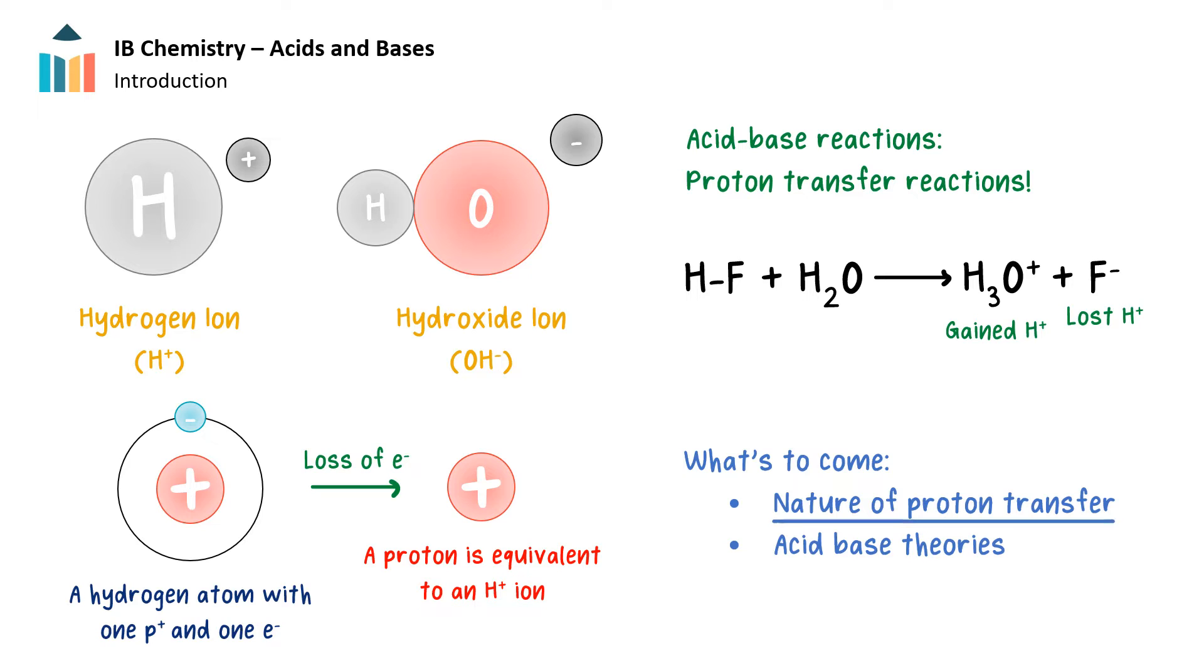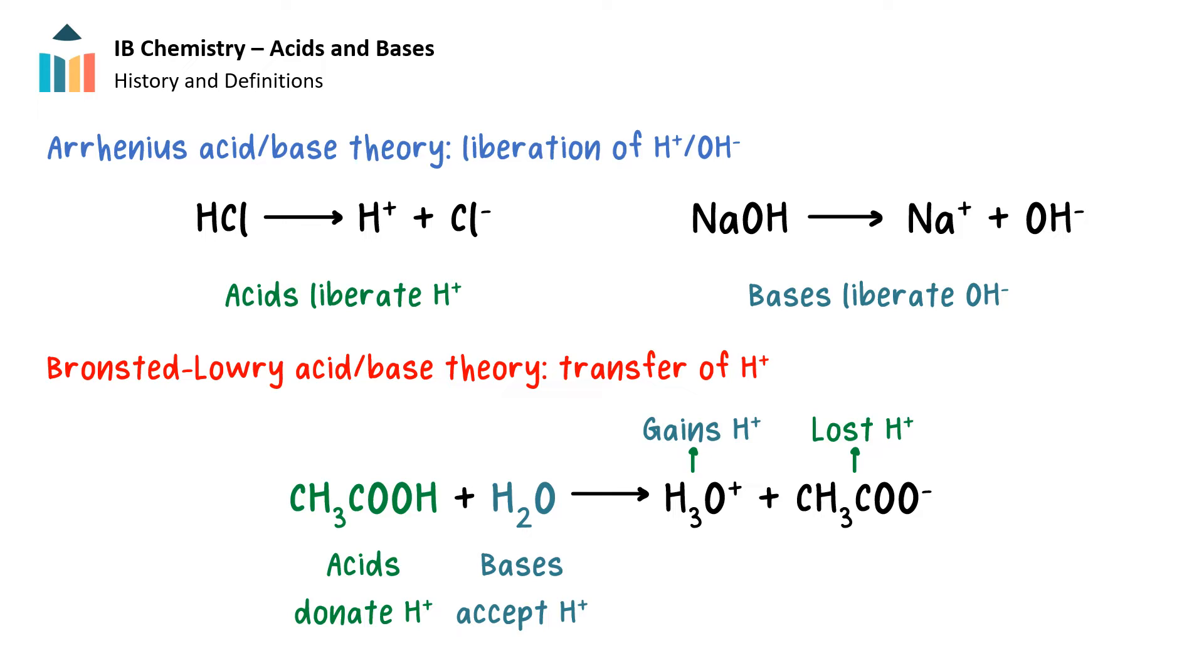In this video, we will examine the nature of proton transfer and how this describes acid-base behavior. We'll also cover some of the theories defining acids and bases. The Swedish chemist Svante Arrhenius recognized the critical role that the hydrogen ion and hydroxide ion played in aquatic systems and described acids and bases relative to the liberation of a hydrogen ion by an acid and a hydroxide ion by a base. Over time, this definition limited the number of substances that could be identified as an acid or base, and it became clear that substances that did not fit the Arrhenius description influenced acid-base properties.